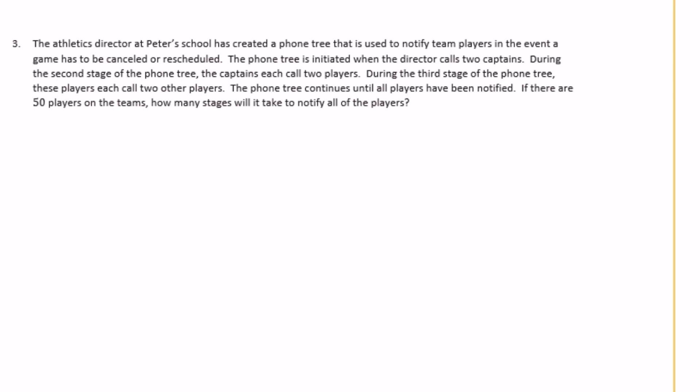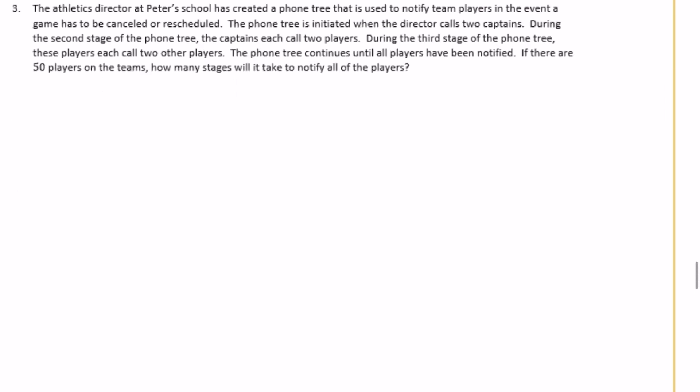This seems like an ancient concept — I remember when we had phone trees to call people if something was rescheduled, but now a coach could just send one text. We can still do the problem though. In stage one, the coach calls two people. Those two people each call two, reaching four more people. Those four people call eight different people. Adding up: two plus four plus eight equals 14 people called so far, and we need to reach 50.